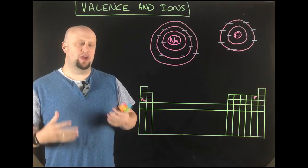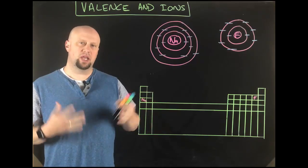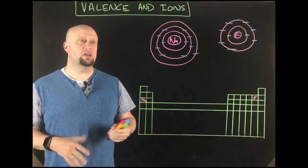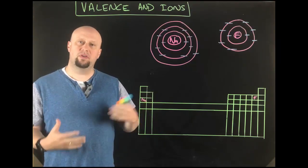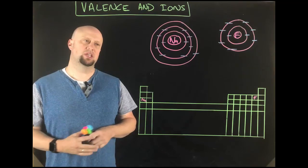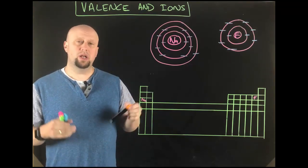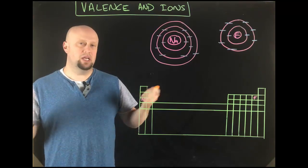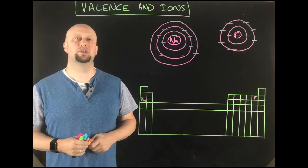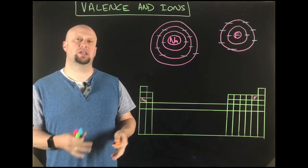Today we're going to talk about valence and ions. We've been talking for the past few videos about electrons and electron configurations, and we mentioned at the beginning that electrons are really the heart of everything that happens in chemistry. Chemical reactions happen because of things that happen with electrons, and more specifically, a large percentage of chemistry is what happens with valence electrons.